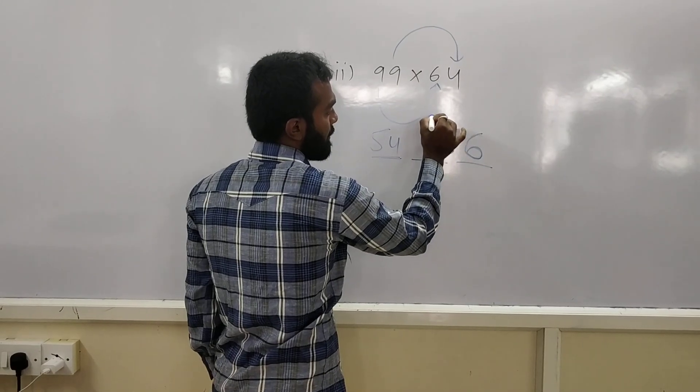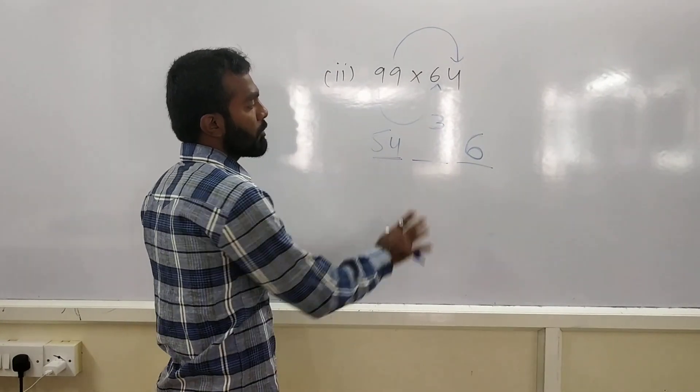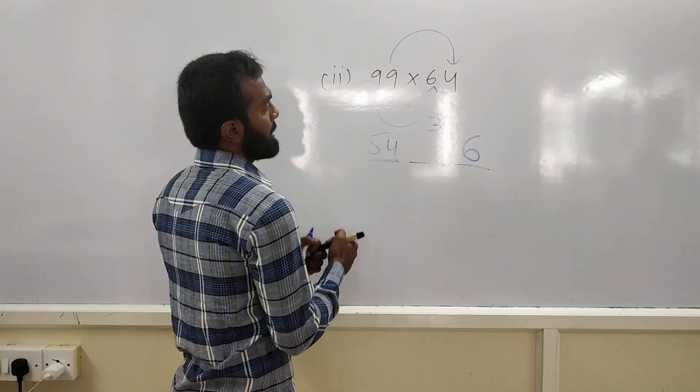And, take the carriage read forward. This is 36. And, to get the middle number. To get the middle number. Just,